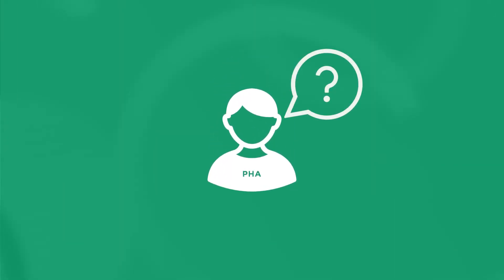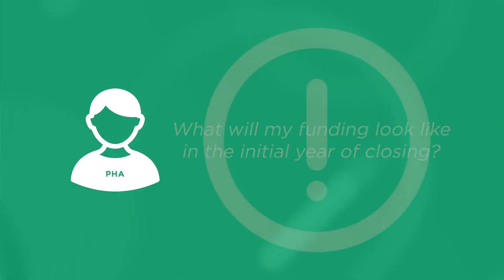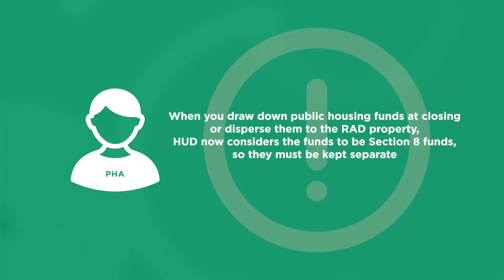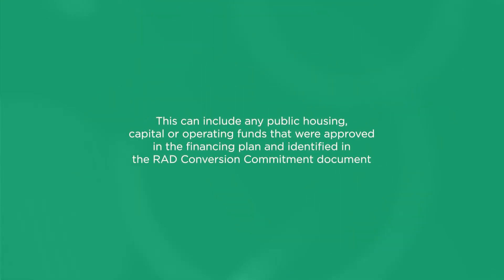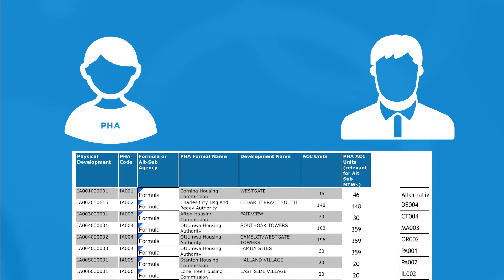One big question PHAs have is: what will funding look like in the initial year of closing? When you draw down public housing funds at closing or disperse them to the RAD property, HUD now considers the funds to be Section 8 funds, so they must be kept separate. This can include any public housing capital or operating funds approved in the financing plan and identified in the RAD conversion commitment document. A PHA and new project owner must execute the initial year funding tool, which provides the amount of capital funds and operating reserves available to fund the project for the remaining months of the year.